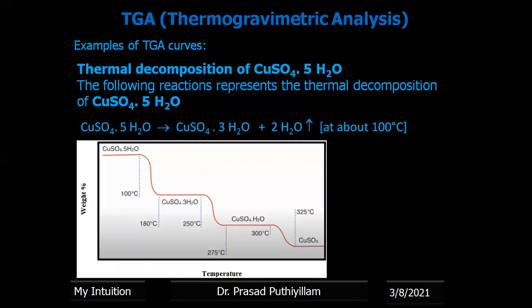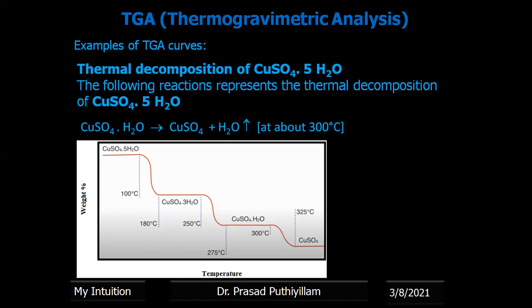Another example is copper sulfate pentahydrate (CuSO₄·5H₂O). It initially loses 2 moles of water of hydration at around 100 degrees Celsius. Then copper sulfate trihydrate loses 2 more water molecules to become copper sulfate monohydrate. At around 300 degrees Celsius, copper sulfate monohydrate loses the remaining water molecule to become anhydrous copper sulfate.